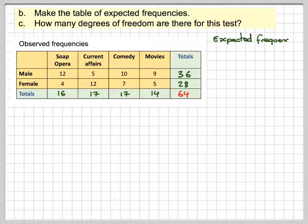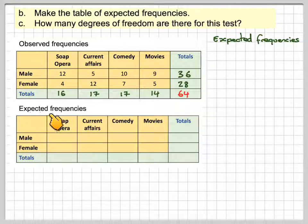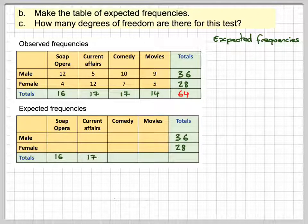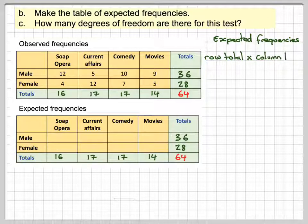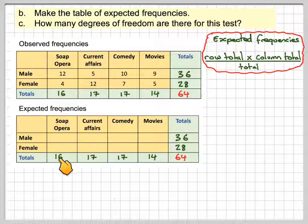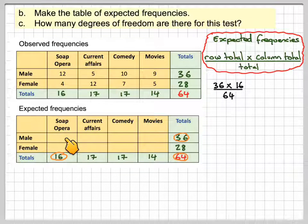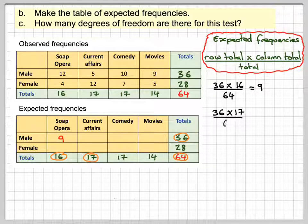For the expected frequencies table, we use the same totals. To calculate each expected value, we take the row total times the column total, divided by the grand total of 64. So the first value is 36 × 16 ÷ 64 = 9. The next one is 36 × 17 ÷ 64 = 9.5625.